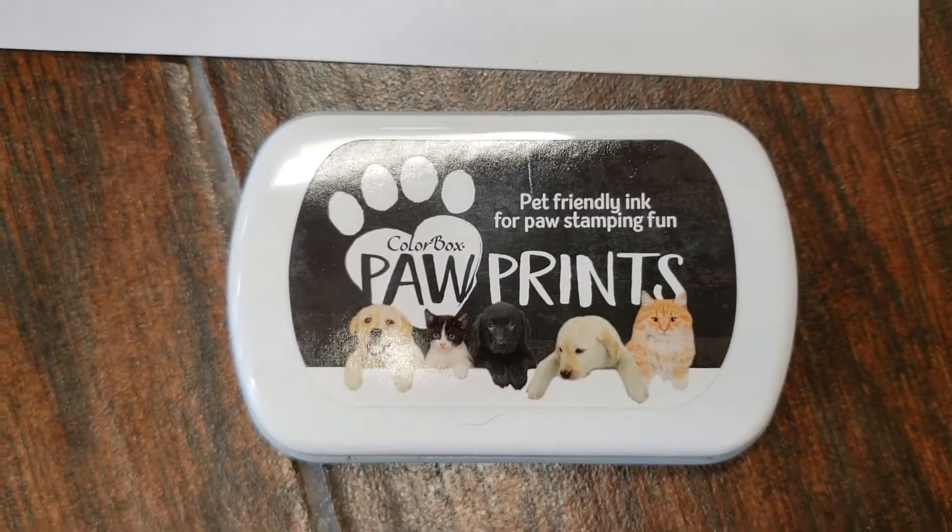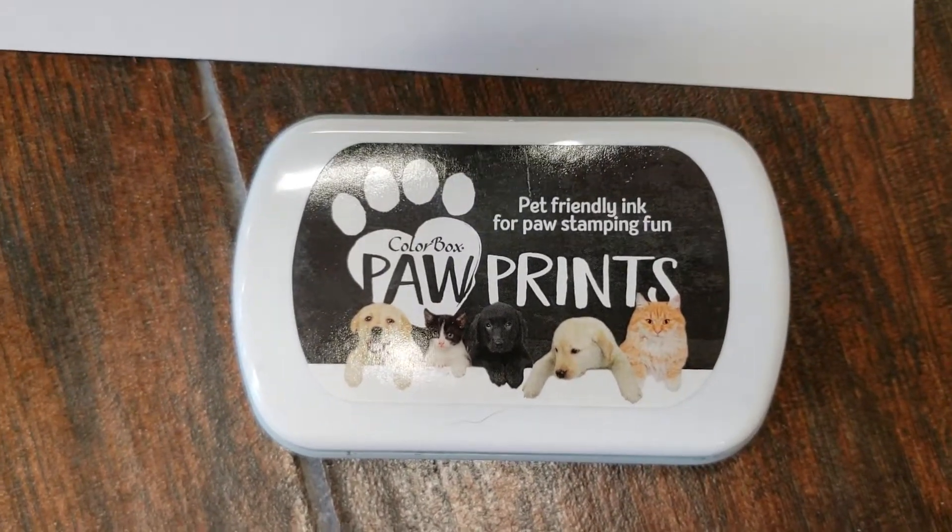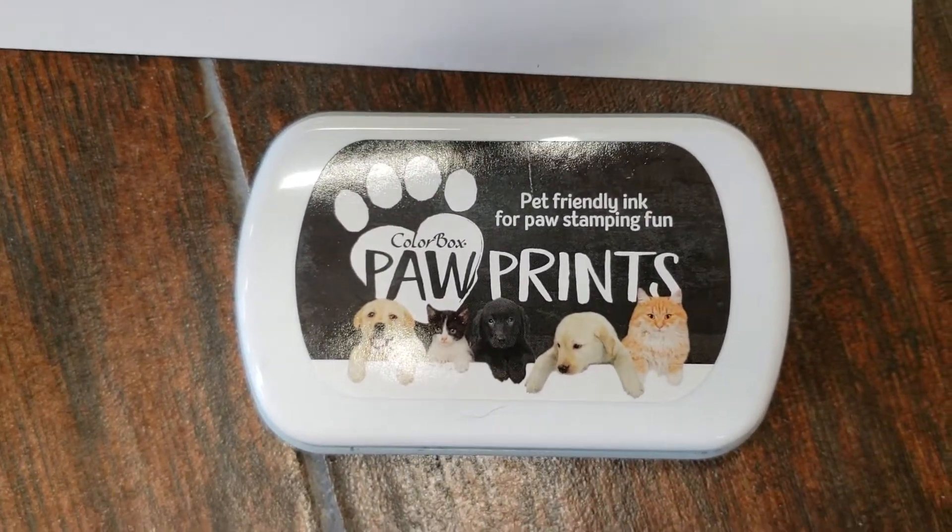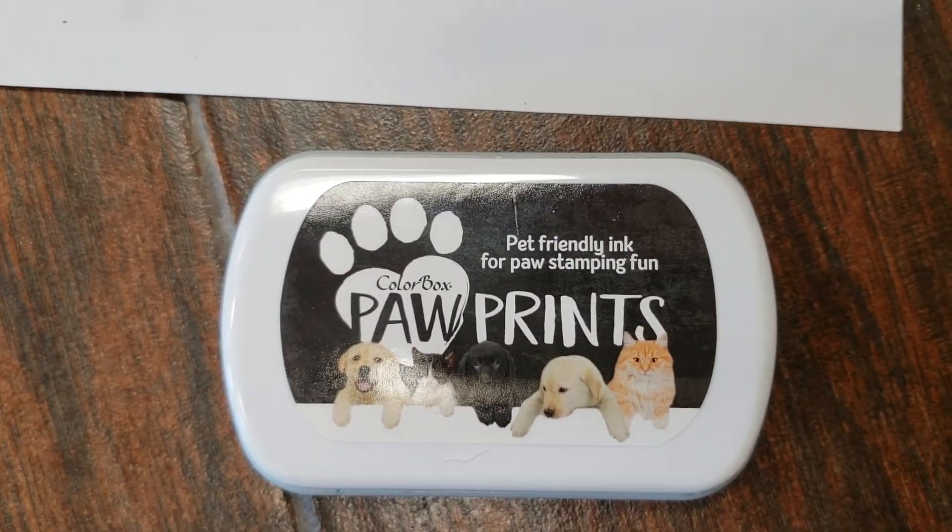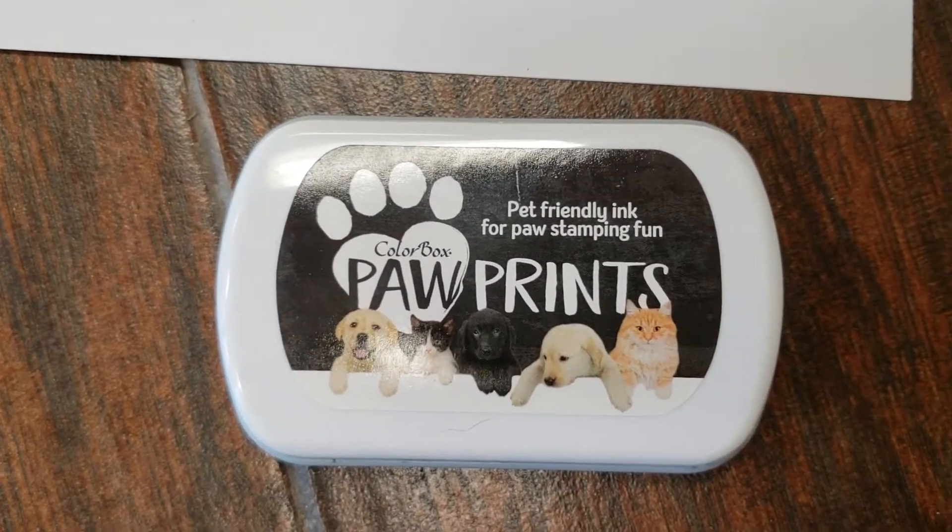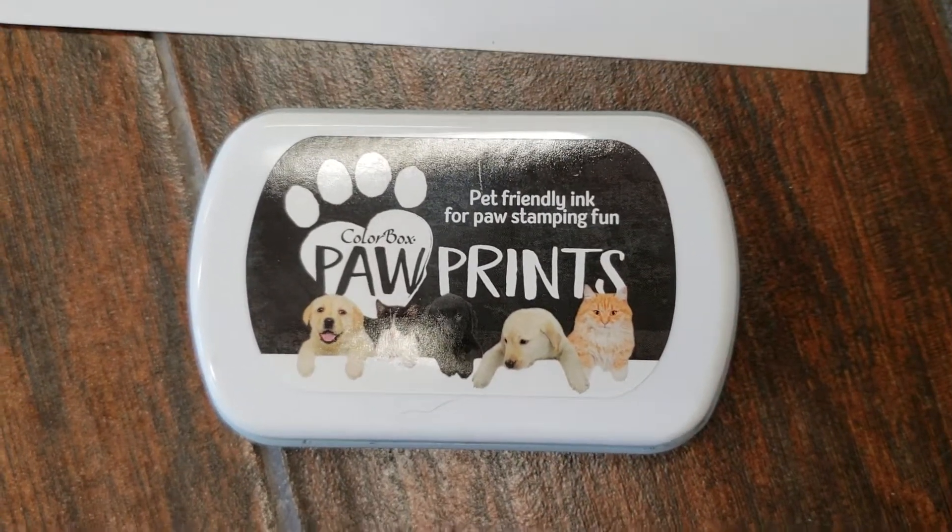To make a pet paw print stamp or imprint, we recommend this product made by Colorbox. You can find it on Amazon or at your local Hobby Lobby or craft store. It's a non-toxic, pet-friendly ink.